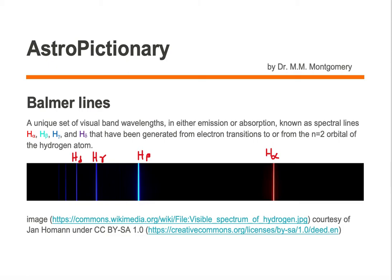Balmer lines are a unique set of visual band wavelengths in either emission or absorption, known as spectral lines H-alpha, H-beta, H-gamma, and H-delta that have been generated from electron transitions to or from the n equals 2 orbital of the hydrogen atom.